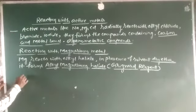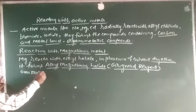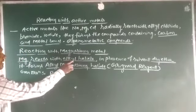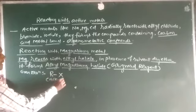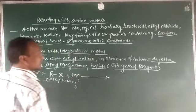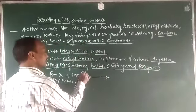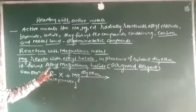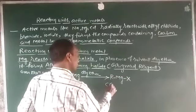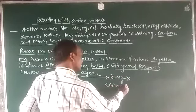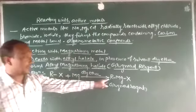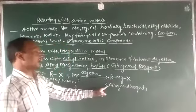Now we will see the general reaction. In general, alkyl halide (RX) reacts with magnesium in the presence of dry ether to form RMgX — alkyl magnesium halide. This is the Grignard reagent, named after scientist Victor Grignard.